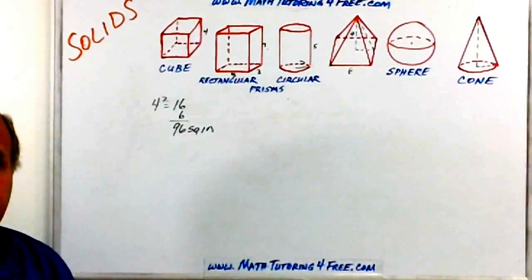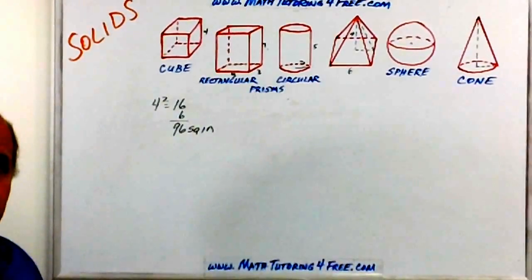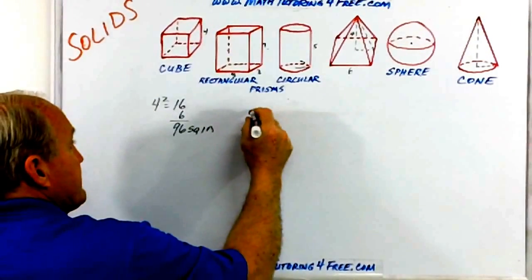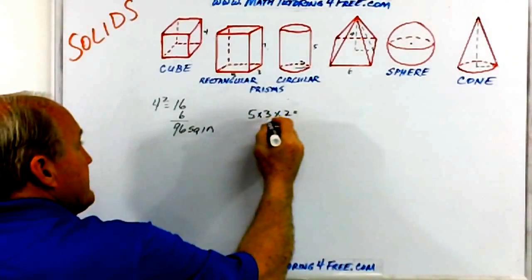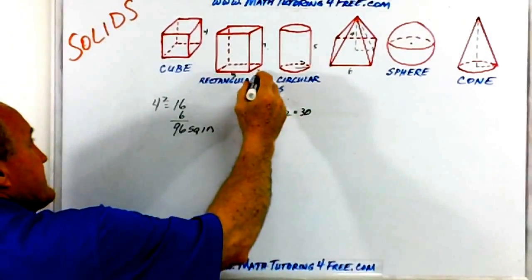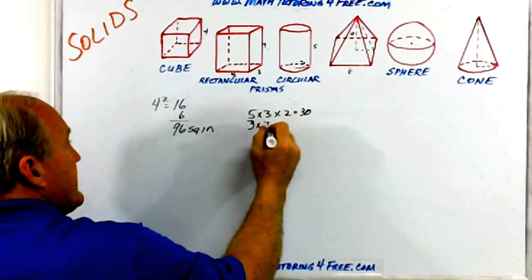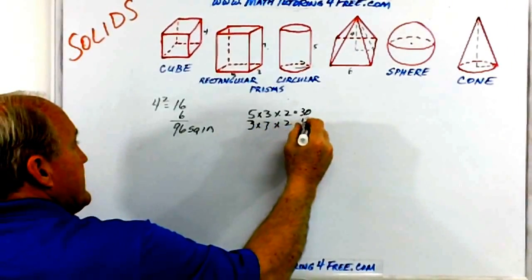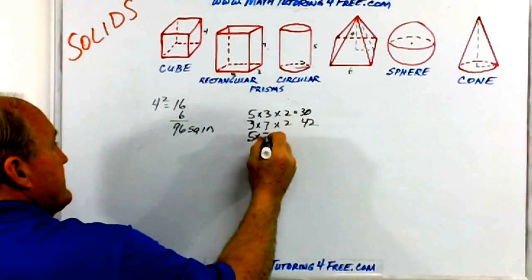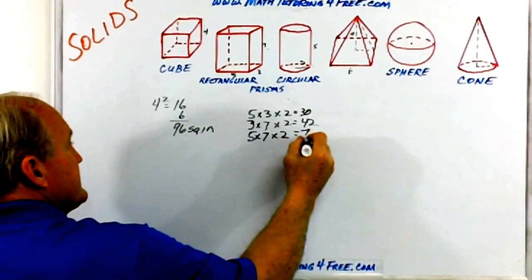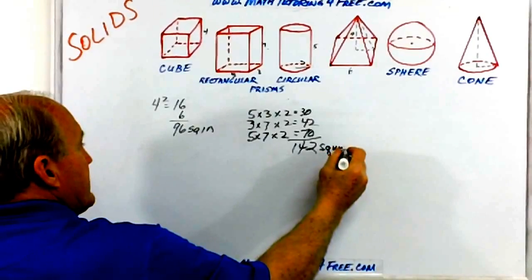In the case of this rectangular prism though, we have actually three different size rectangles, don't we? We have the top and bottom are five times three, and there's two of those. So the area for the top and bottom is 15 times two, that's 30. This side is three times seven, and it's the same as the side opposite, isn't it? So that's three times seven, and there's two of those. So that's 21 times two, that's 42. And then finally the front and back are really five times seven, so five times seven, and there's two of those. So that's 35 times two is 70. Add them together and you get 142 again square units, whatever they happen to be.